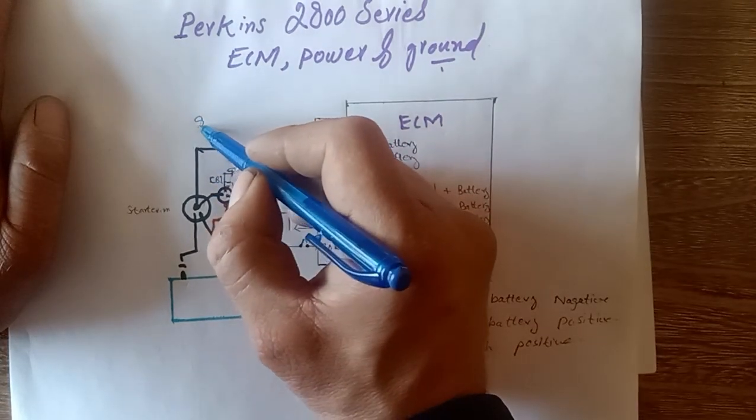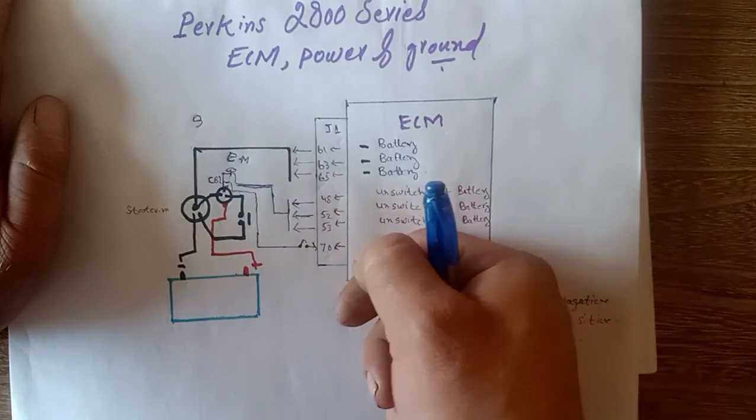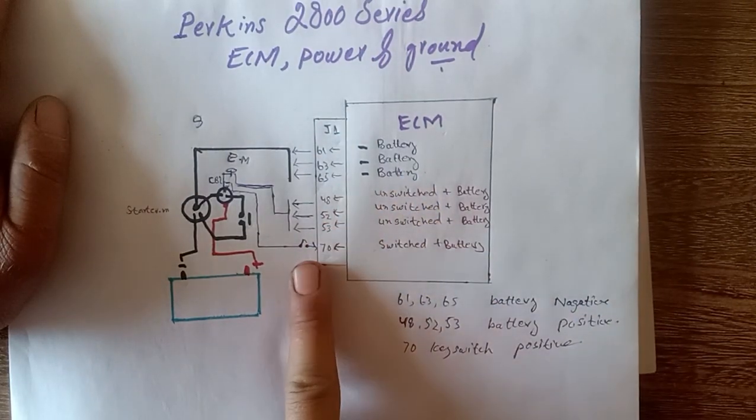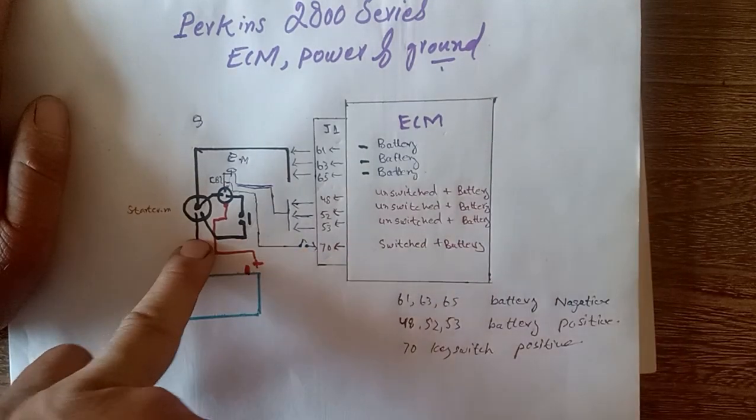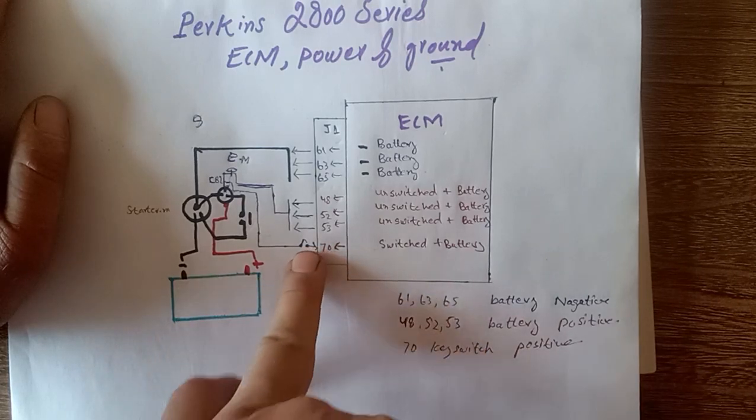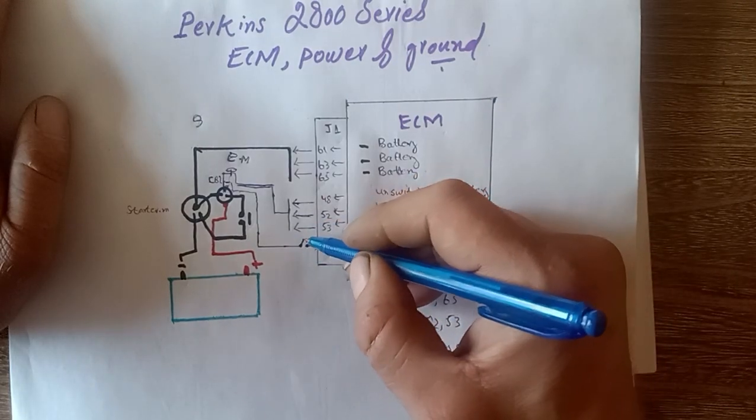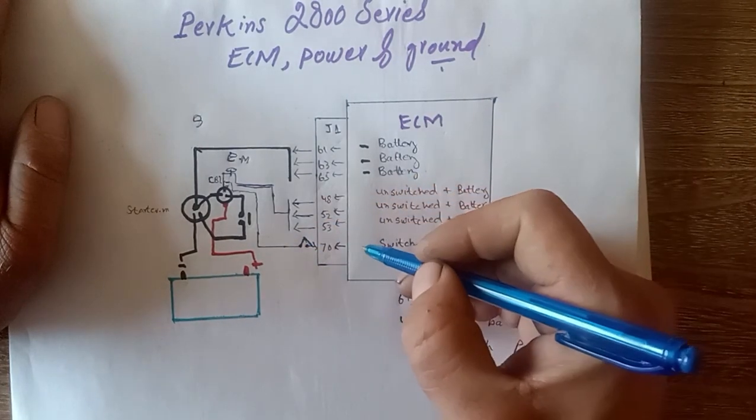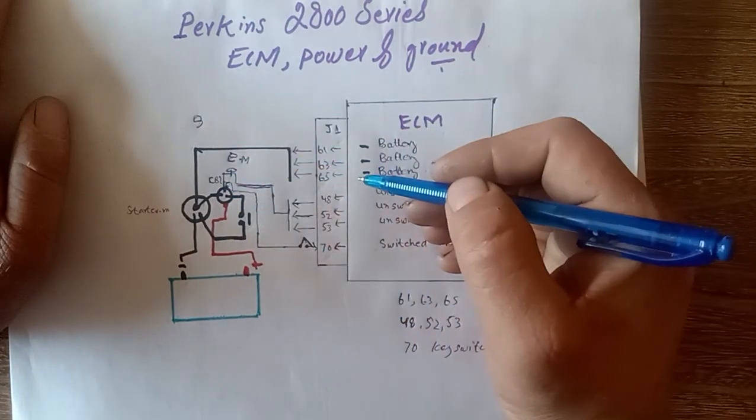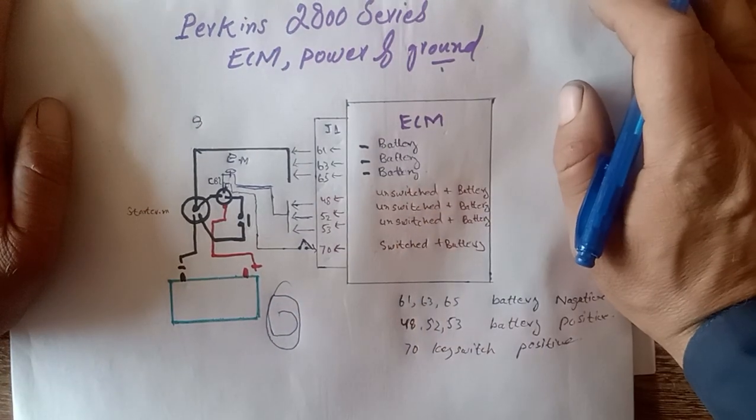And this supply is going to the starter motor small S terminal for signal. When we press the, when we crank the engine or press the key of generator like a control panel button, start button, this which prior to now in this condition goes closed and this supply goes this way to the starter motor S terminal and engine is turning over. This is the complete ECM energizing supply and starter starting circuit.